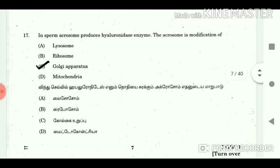17. In sperm, the acrosome produces hyaluronidase enzyme. The acrosome is a modification of? Answer: Golgi apparatus.